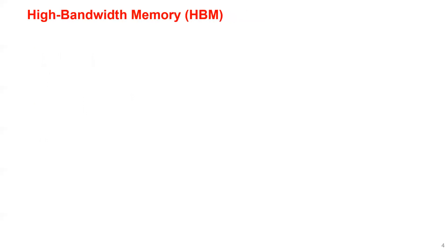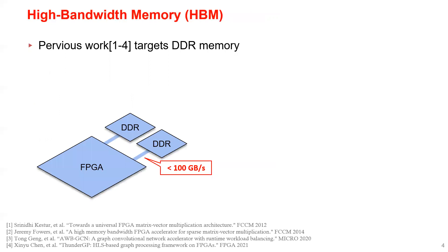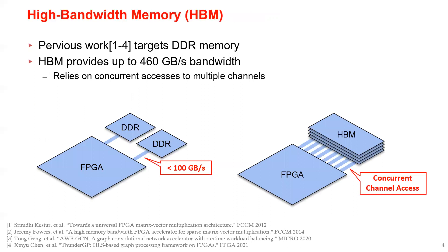And here is a little bit of background. There are lots of previous attempts of accelerating sparse linear algebra on FPGAs with DDR memory, but their performance is limited by the DDR bandwidth. On the other hand, HBM provides exceptional bandwidth which brings the potential of further acceleration.